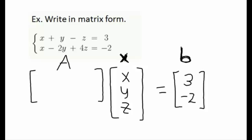The last matrix is the coefficient matrix, capital A. It contains all of the coefficients of the variables on the left-hand side of the equal sign — I need to include the signs. From the first equation I have 1x, 1y, negative 1z, giving the first row: 1, 1, negative 1. From the second equation I have 1x, negative 2y, 4z, giving the second row: 1, negative 2, 4. That's our coefficient matrix A, and together with bold x and bold b this is what we call matrix form.